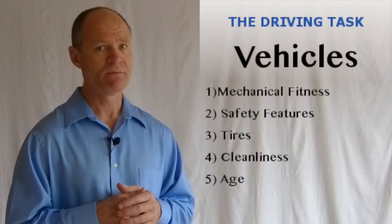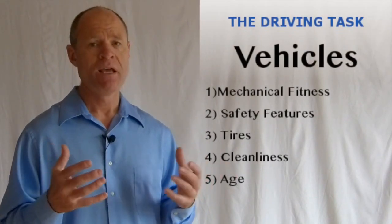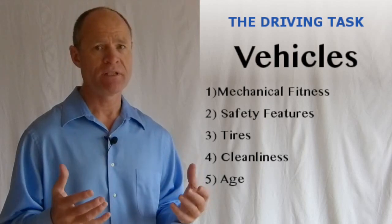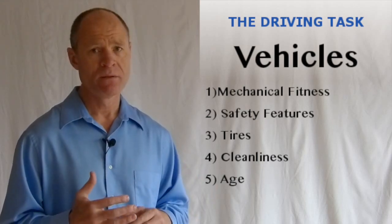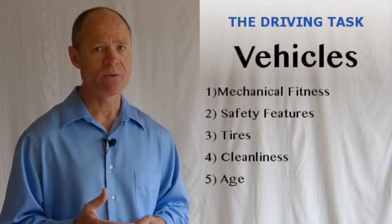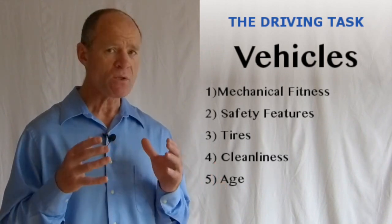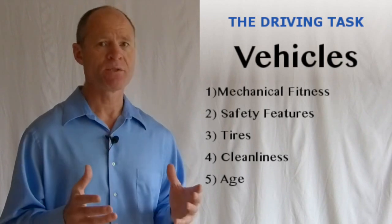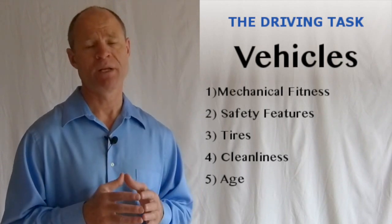The next variable for the driving task is the vehicle. Vehicles can be in any sort of mechanical fitness on any given day. Tires are bald, the brakes haven't been done for some time, brake lights are out, lights are not working. So like the driver, vehicles on a roadway can be in any sort of mechanical fitness shape as well. That's another factor you as a driver are dealing with.